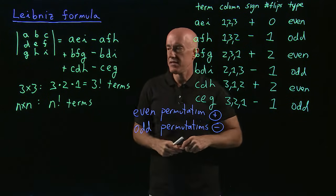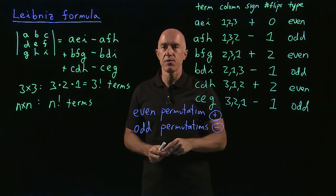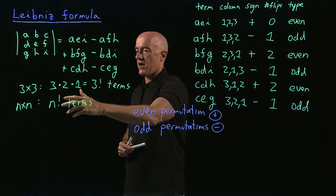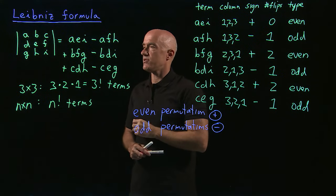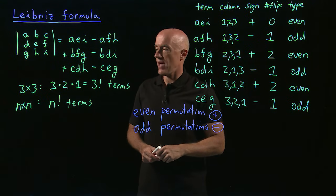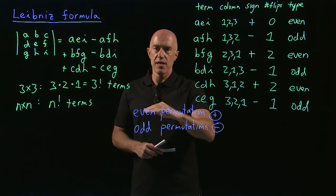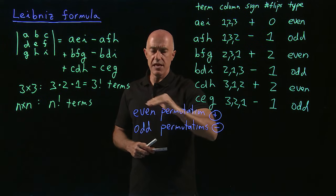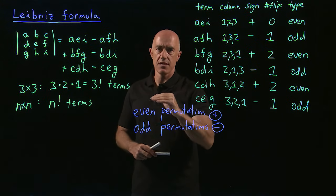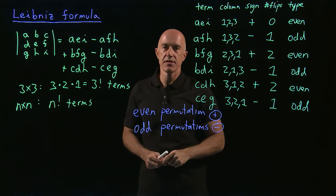So that's the Leibniz formula. It's a very lengthy calculation when n is large, but for certain matrices it may be the simplest way to compute the determinant. To summarize: to compute the determinant of an n by n matrix, write down n factorial terms. If there are many zeros in the matrix, many terms will be zero. The sign is plus when the column choice is an even permutation of 1, 2, 3, …, n, and minus when it is an odd permutation. I'm Jeff Chasnov — thanks for watching and I'll see you in the next video.